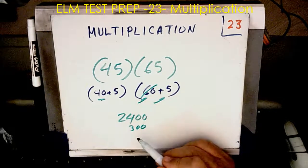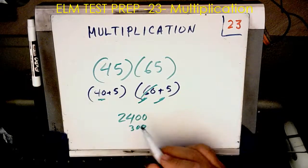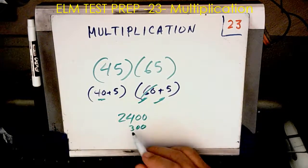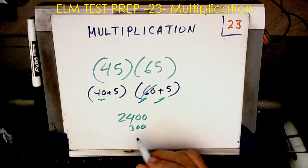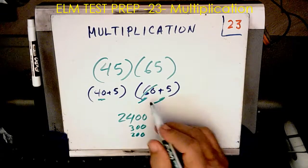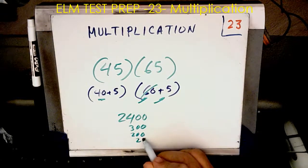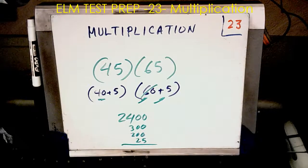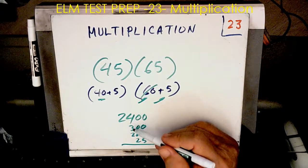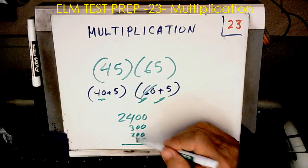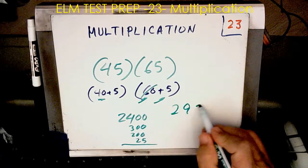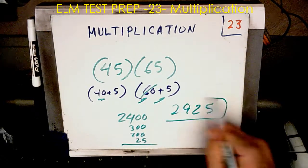So the 60 is done. 5 times 40. 5 times 4 is 20 plus a 0. That's 200. And 5 times 5 is 25. And then all I have to do is sum that up. 2400, 2700, 2900, 2925. And I am done.